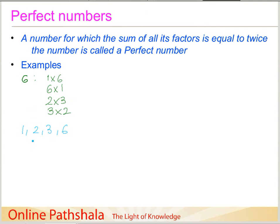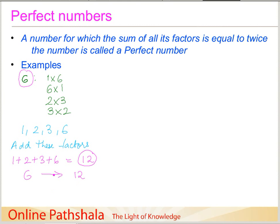Now let us add these factors: 1 plus 2 plus 3 plus 6 equals 12. So the sum of the factors is 12 and the number is 6. The relation between 6 and 12 is simply that 12 is 6 multiplied by 2. The sum of the factors is twice the number.